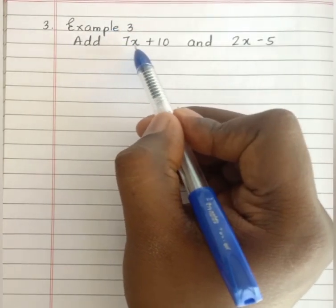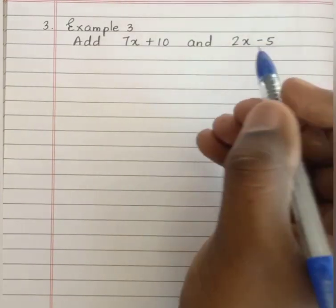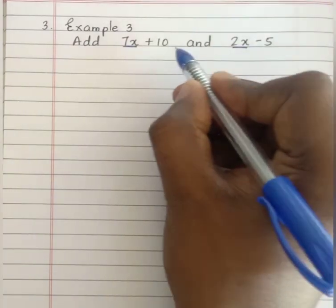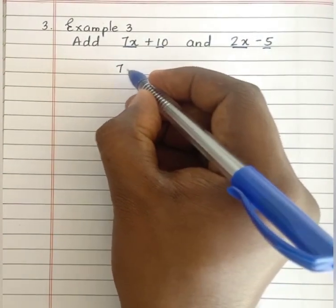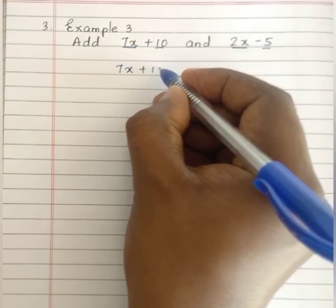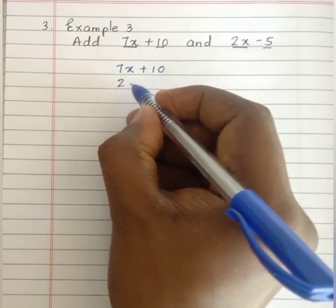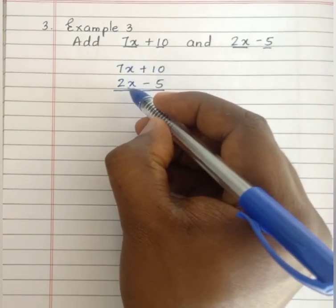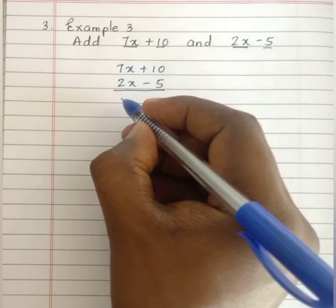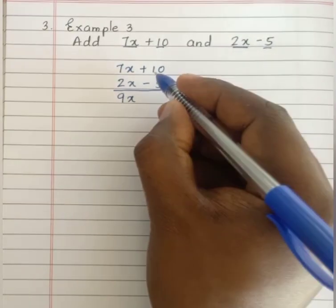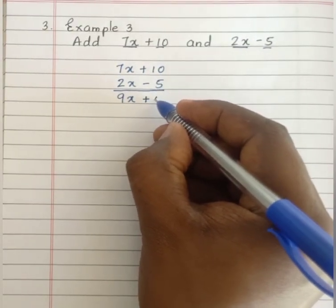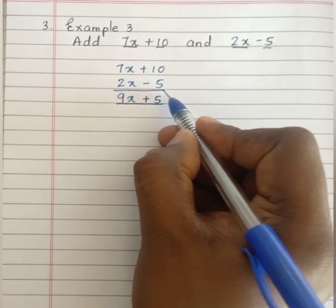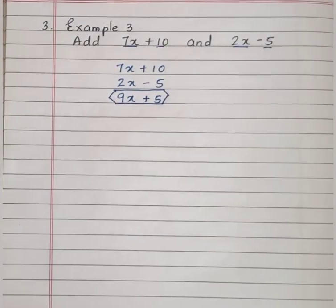Example 3: add 7x plus 10 and 2x minus 5. Now, 7x and 2x form a like term, and plus 10 and minus 5 are another like term. Write down 7x plus 10 below 2x minus 5, then add the like terms. 7x plus 2x is 9x. Then 10 minus 5 gives plus 5, since the bigger number's sign is plus. Therefore, we get 9x plus 5.